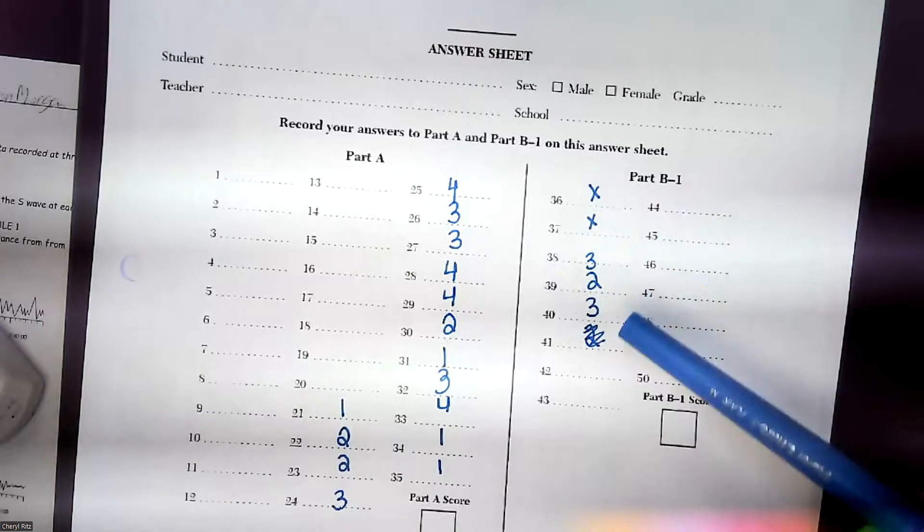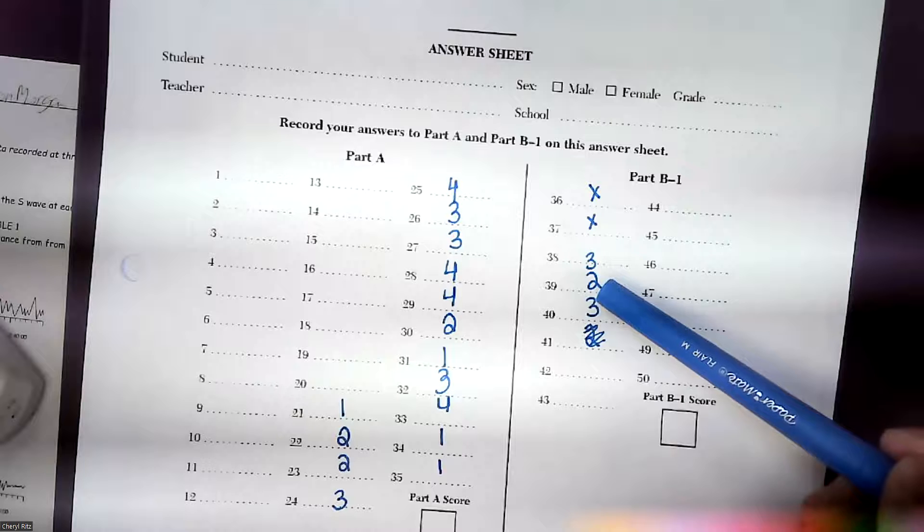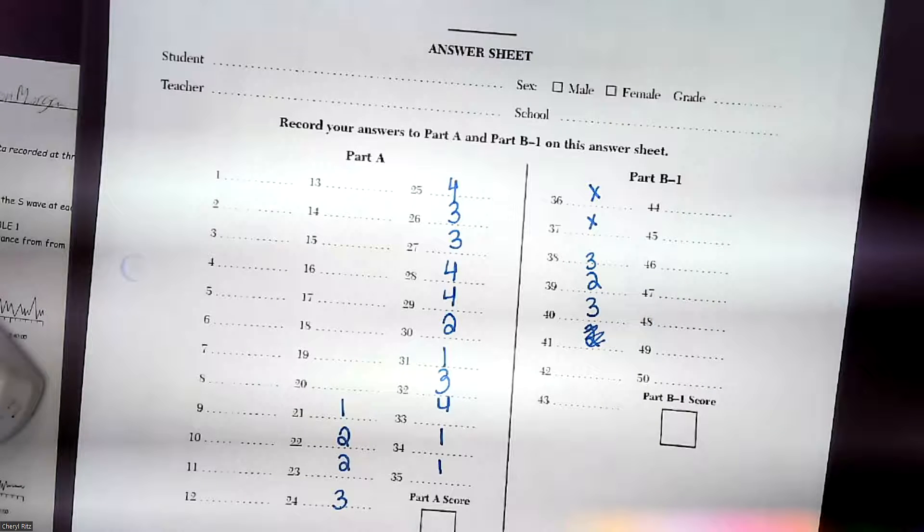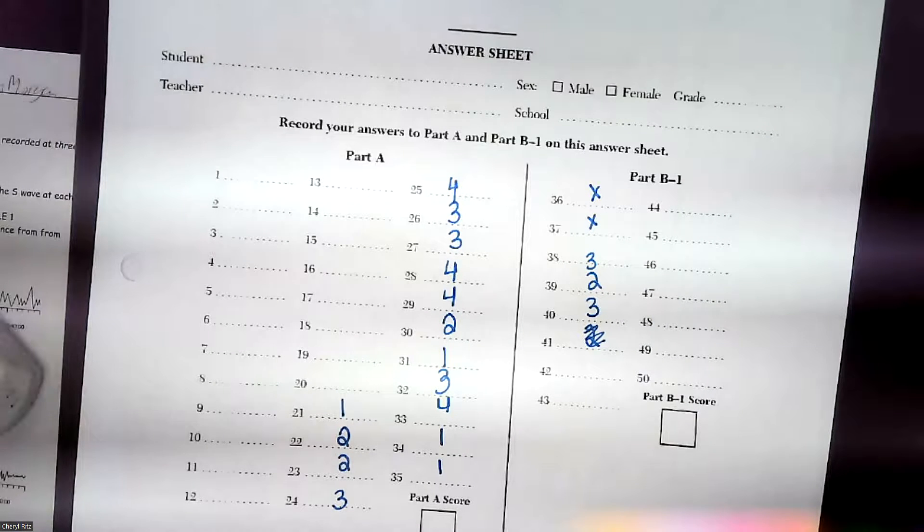You skipped 36 and 37. Then we have 38 was 2, 39 was 2, and 40 was 3. Why don't you take a minute to check to see why you got some wrong. See if there's any you want me to explain.